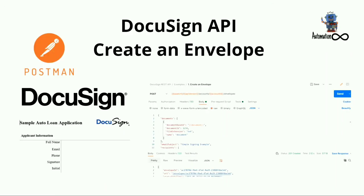In this video, we saw how to create an envelope and send it to the intended recipient with a document to sign. In the upcoming video, we are going to see how to automate this process with UiPath and how to integrate DocuSign with UiPath to authenticate and to create an envelope via API. Stay tuned for more such videos, and see you in the next video. Bye-bye.